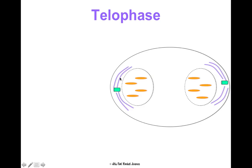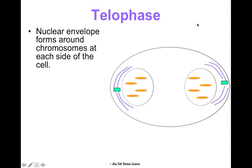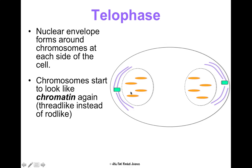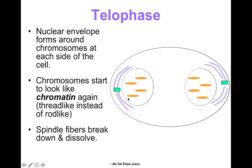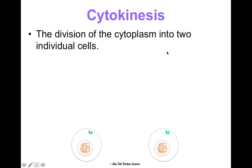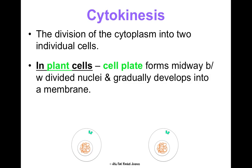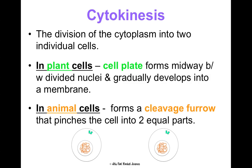In telophase, the spindle fibers start dissolving and the nuclear membranes start reforming to form two nuclei. The DNA also decondenses, starting to look thread-like rather than rod-like — looking like chromatin. Then cytokinesis begins: the cytoplasm starts to divide. In plant cells, a cell plate forms midway between the dividing nuclei and gradually develops into a membrane. In animal cells, a cleavage furrow forms, pinching the cell in the middle so it splits into two equal parts. The end result is two identical body cells with the same amount of DNA.